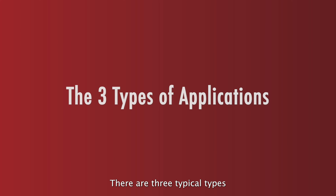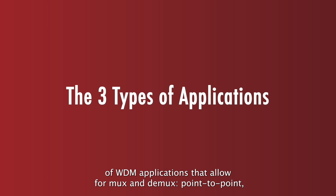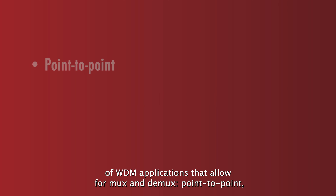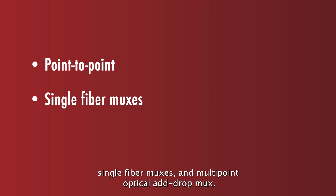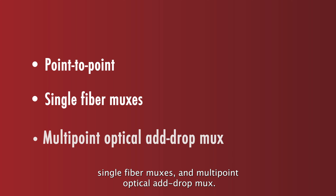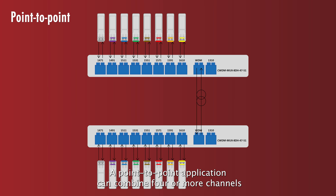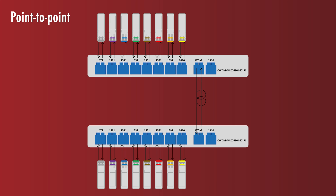There are three typical types of WDM applications that allow for MUX and DMUX: point-to-point, single fiber MUXs, and multipoint optical add-drop MUX. A point-to-point application can combine four or more channels onto a single fiber pair, with MUX and DMUX at the end of each connection.